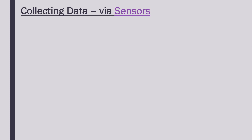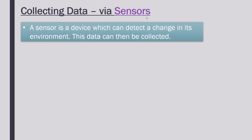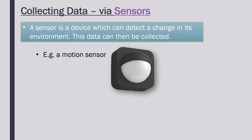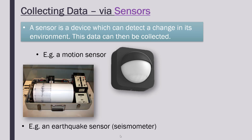A third common way of collecting data is via sensors. A sensor is a device which can detect a change in its environment, and that change is the data being collected. For example, a motion sensor — something you often see in toilets and maybe outside a garage where a light turns on when triggered. It's detecting a change in motion, figuring out if there's any movement around it.